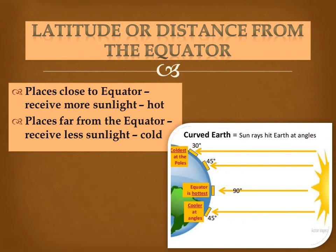As you can see in the diagram, the earth is curved, and the equator receives direct sunlight at 90 degrees. So the equator is the hottest region, but when there is distance from the equator, those places are cold.